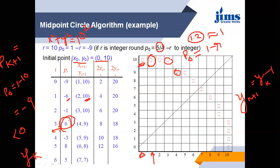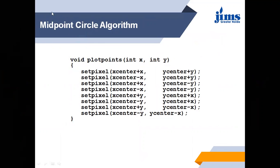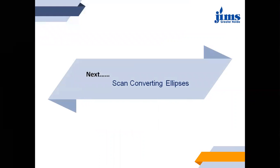So this was about the midpoint circle algorithm. Generally in exams they do not ask for the algorithm itself; they ask a question based on it. In scan conversion there are two types of questions: for lines they ask either DDA or Bresenham's line algorithm, and for circles they always ask about the midpoint circle algorithm — a question based on that.